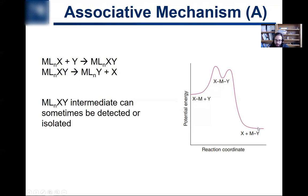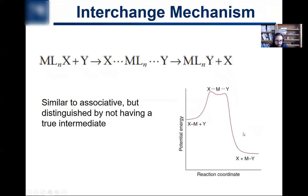The reaction coordinate for the associative mechanism looks very similar to the dissociative case: you have the associated intermediate, and two reaction barriers to get between the intermediate and the final product.